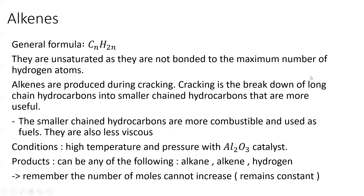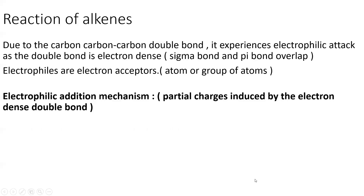Alkenes are produced during cracking. Cracking is the process where you break down long-chain hydrocarbons into small-chain hydrocarbons that are more useful. Small-chain hydrocarbons are more combustible and used as fuels because they're easy to burn and give out more energy; they're also less viscous. Long-chain hydrocarbons are mainly used for tar and roads. The conditions for cracking are high temperature and pressure with an Al2O3 catalyst.